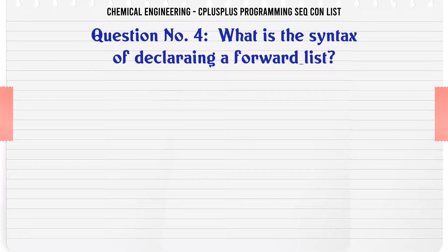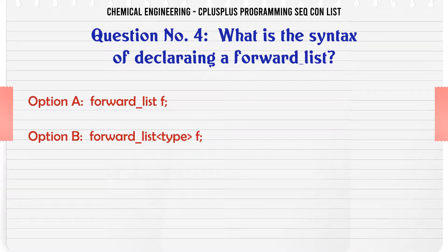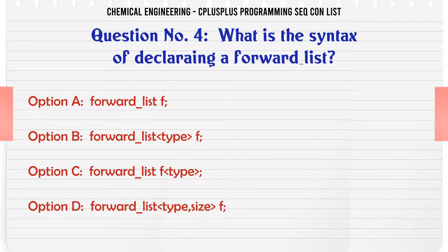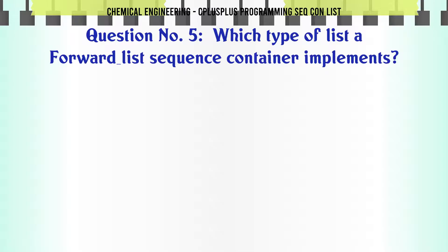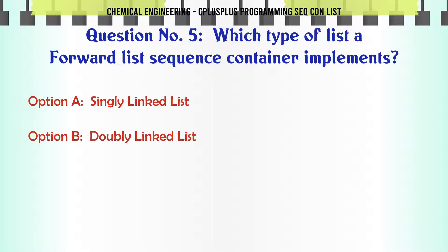What is the syntax of declaring a forward list? A. forward_list F. B. forward_list<type> F. C. forward_list F<type>. D. forward_list<type, size> F. The correct answer is: forward_list<type> F.